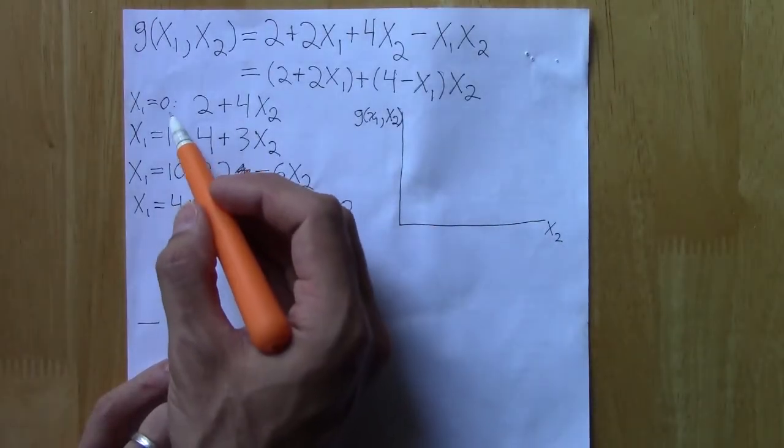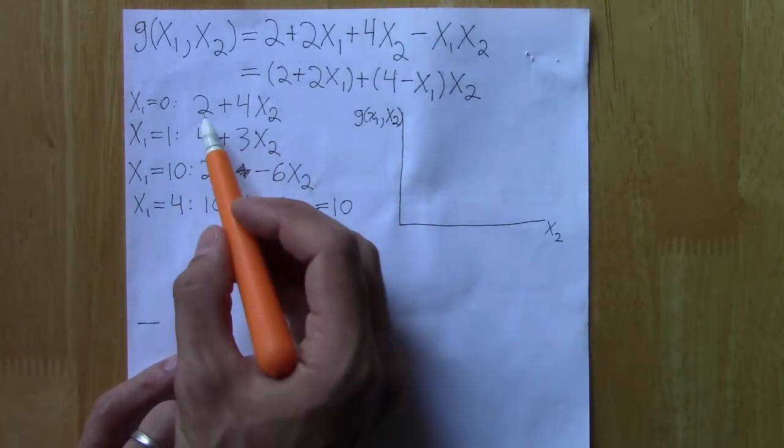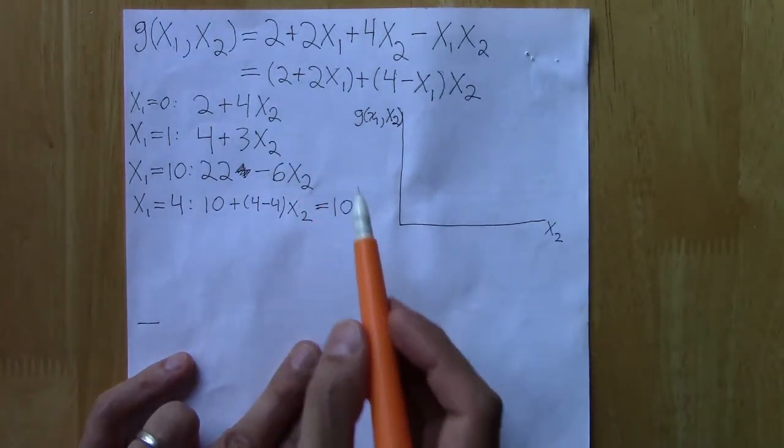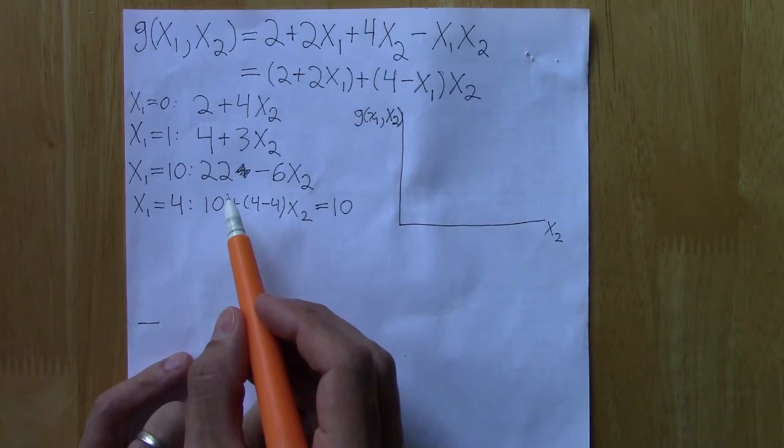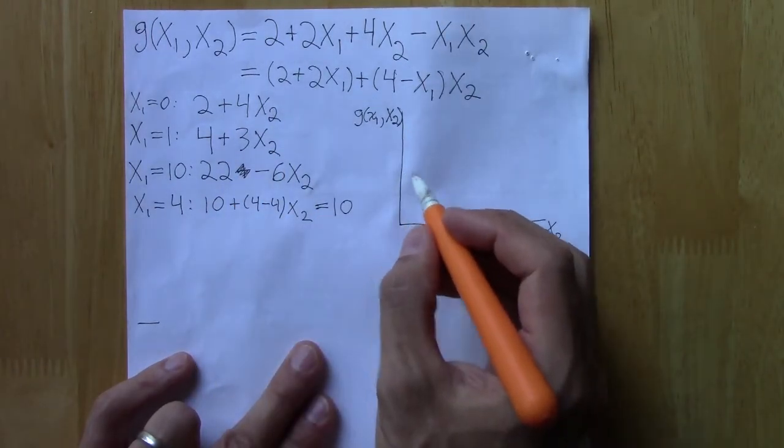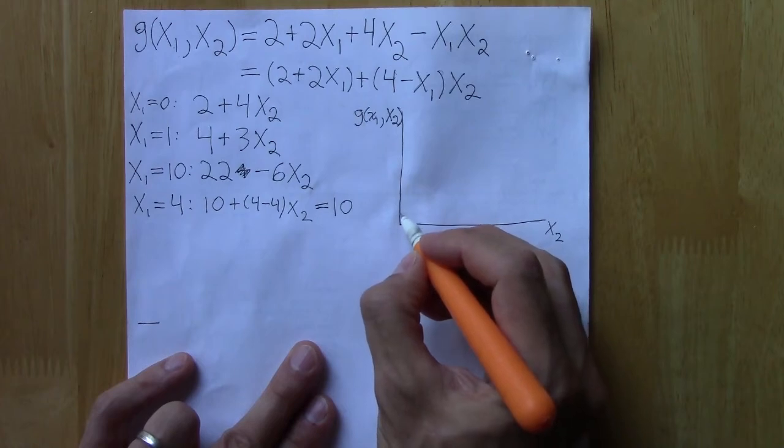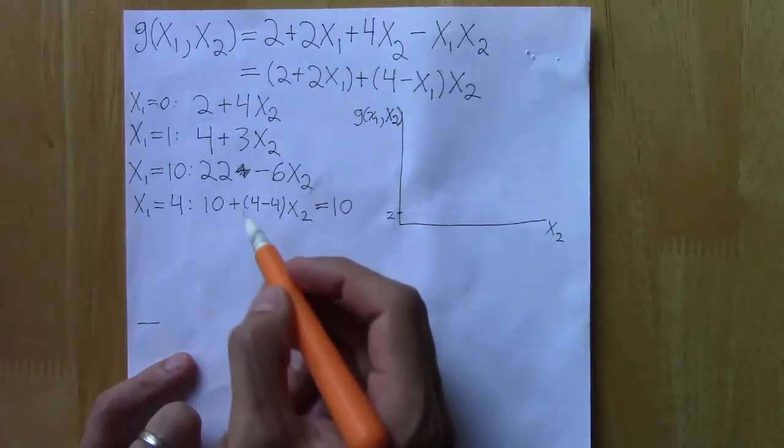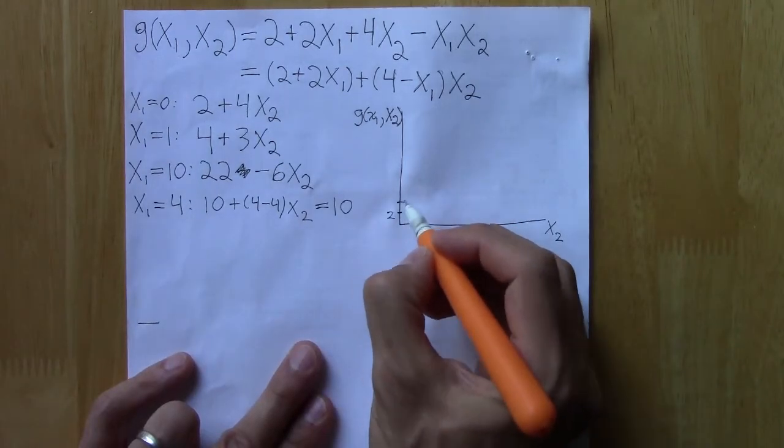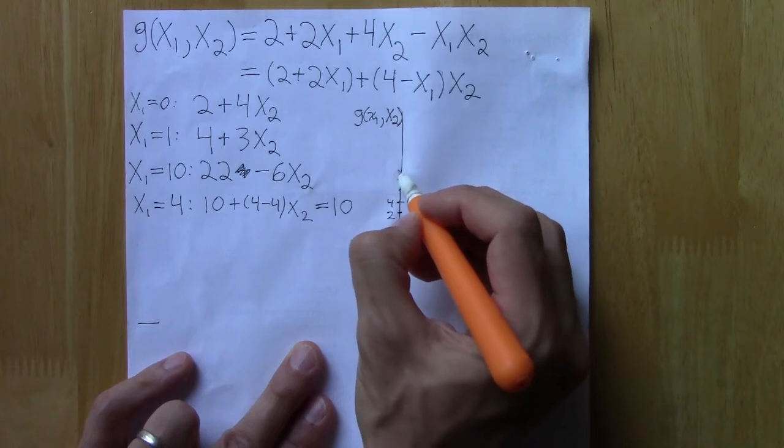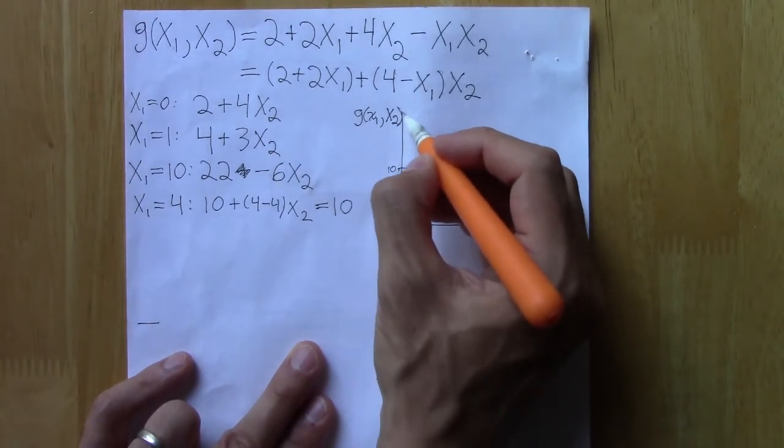So when we plug in zero, we get 2 plus 4. Let me try to see what sort of scaling would be appropriate. I'll just try to guess. So maybe 2 is down here. Just look at the intercepts first. 4, 6, 8, 10, maybe 20, 22, way up there.